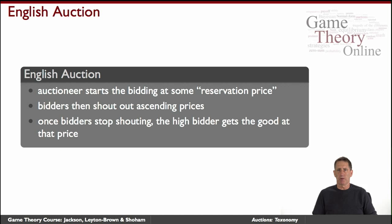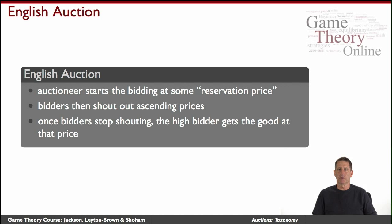The English auction is probably the most familiar format — the sort of thing used in art auction houses. Auctioneers start with some initial price, often called the reservation or reserve price. Bidders in the auction shout ascending prices, and at some point they stop. The auctioneer may try to cajole them into suggesting higher prices, but at some point nobody says anything. At that point the auction is closed, and the highest bidder wins the good at that price.